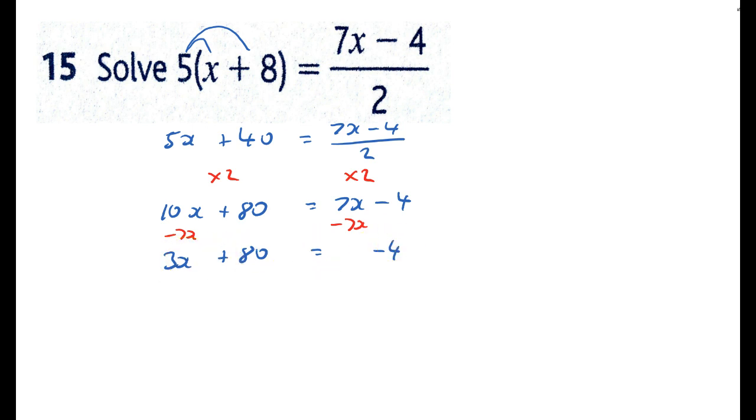I now need to get rid of that plus 80 so I need to take away 80 from the left-hand side, take away 80 from the right-hand side and that will say 3x equals minus 84.